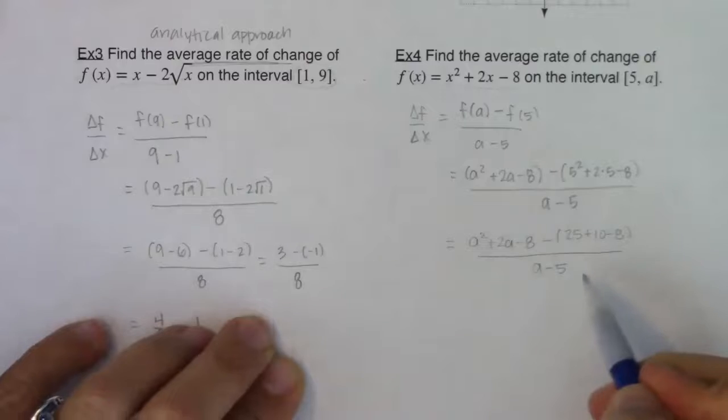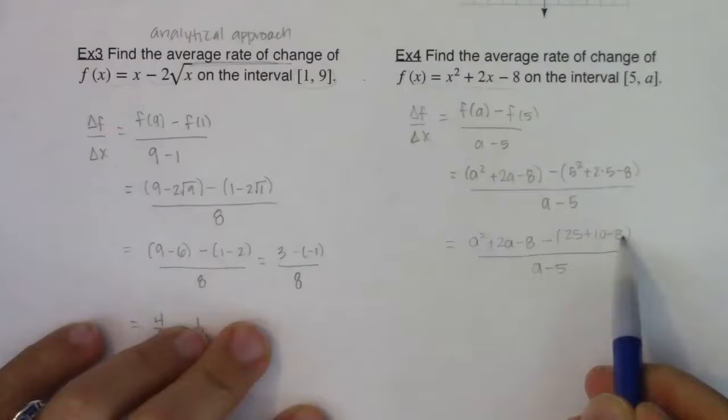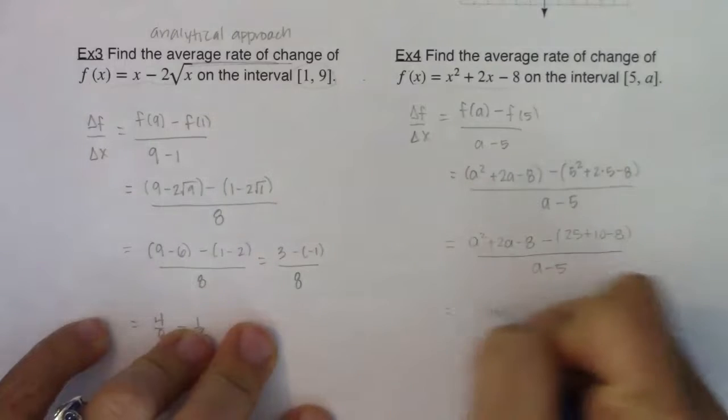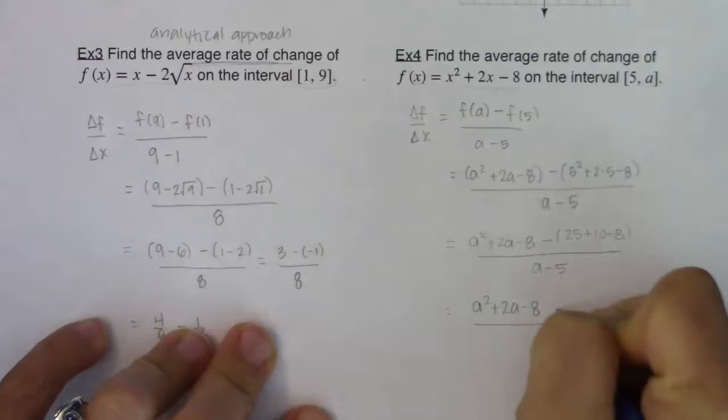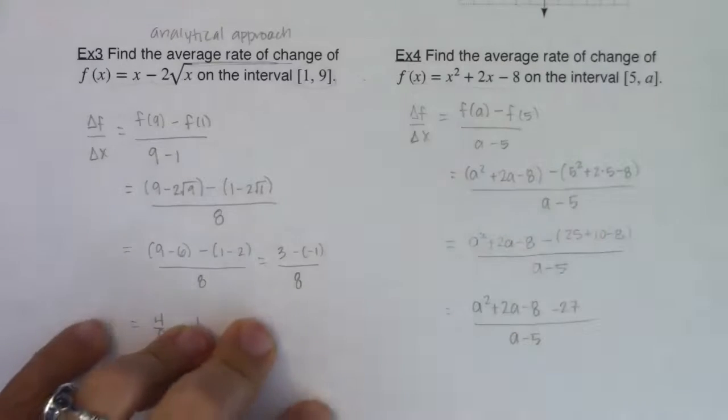All right, 25 plus 10 is 35. 35 minus 8 will be 27. And so then I'm going to have, ultimately, A squared plus 2A minus 8 minus, we just said 27 in ratio to A minus 5.